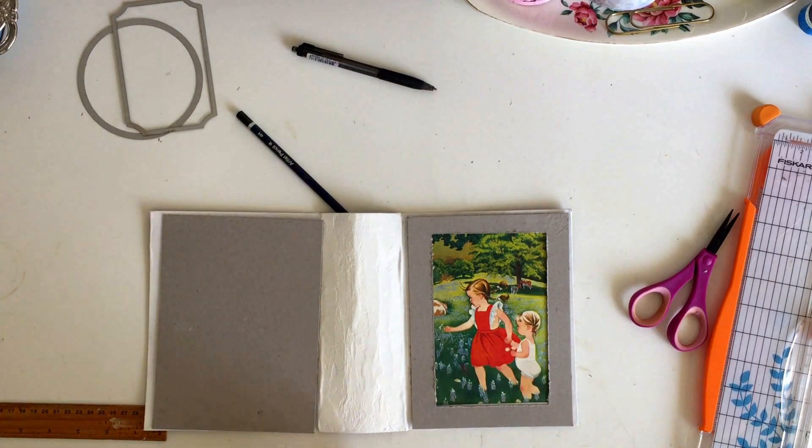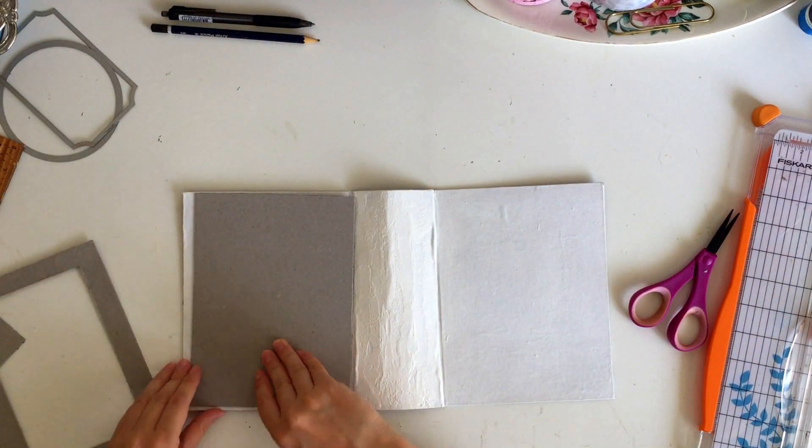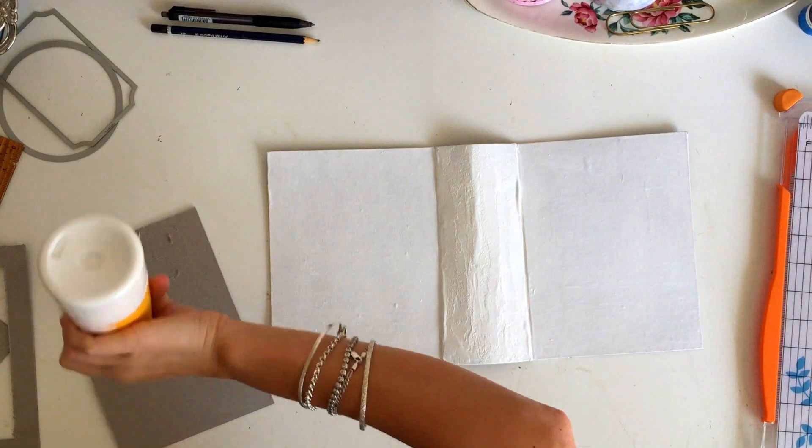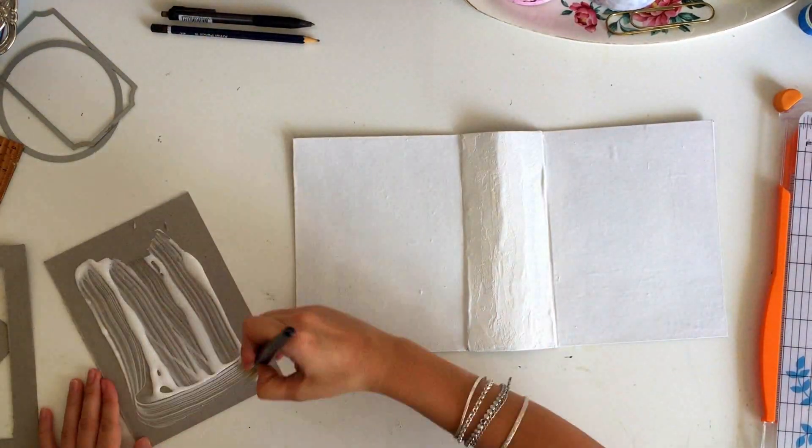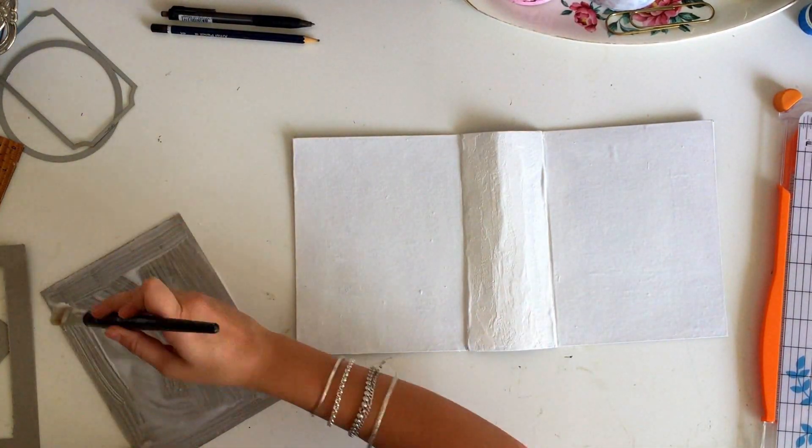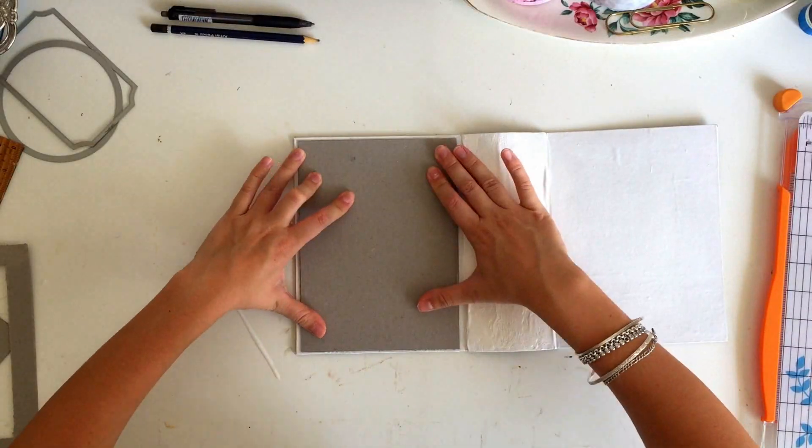Then we need to attach those boards onto the cover and I like to do that with a generous amount of acid-free PVA glue. Make sure you press the pieces down really well and give them plenty of time to dry and adhere to the cover.